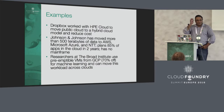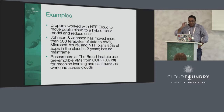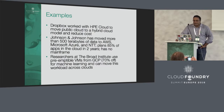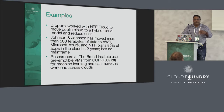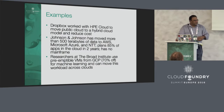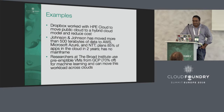I'll give you a few examples. Dropbox, which was implemented in public cloud with HP's assistance, has moved to hybrid cloud to reduce cost — they've moved a portion of it. This is the kind of use case where people move from one cloud to another provider to lower cost. Johnson & Johnson, a Fortune 100 company, moved a lot of data to AWS, Azure, and NTT.